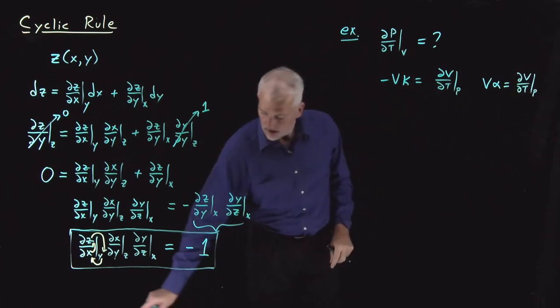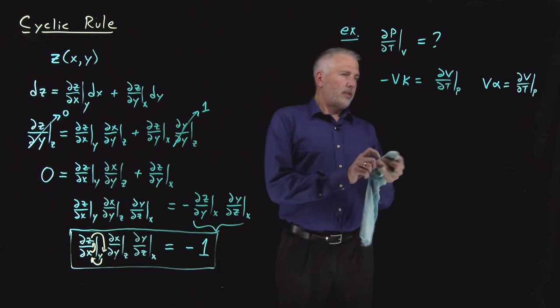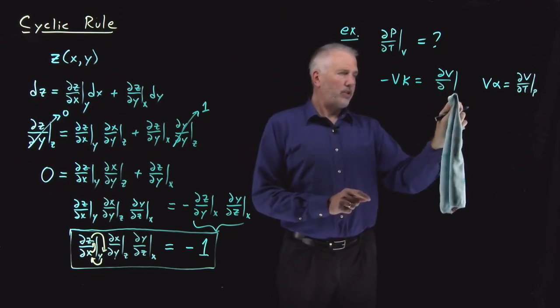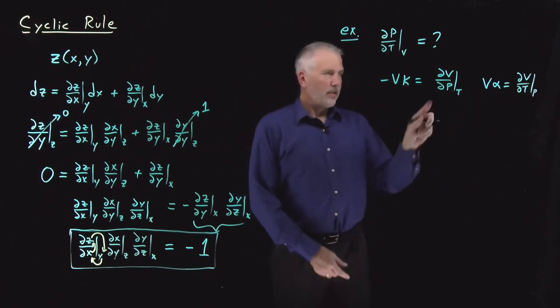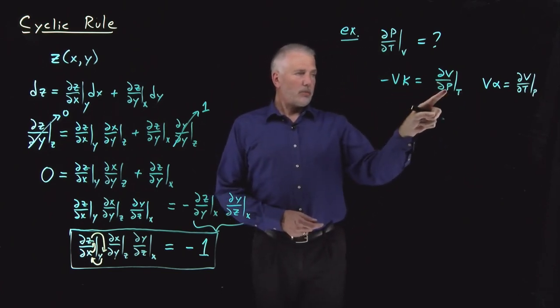Actually, that's wrong. This one's correct. The isothermal compressibility is, as I change the pressure isothermally, how does the volume change? That's the isothermal compressibility.